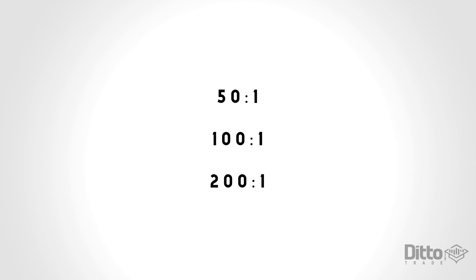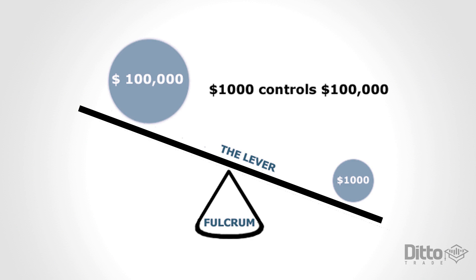Some brokers do offer higher leverage options, but not always. Let's use a 100 to 1 ratio as an example. 100 to 1 leverage means that the trader is required to have at least 1% of the total value of the trade available as cash in their trading account.